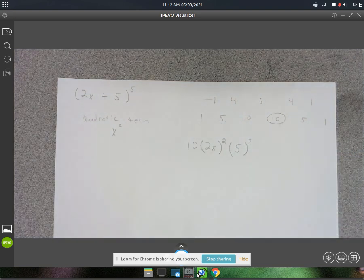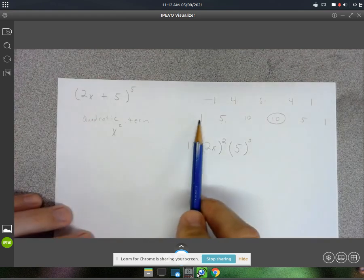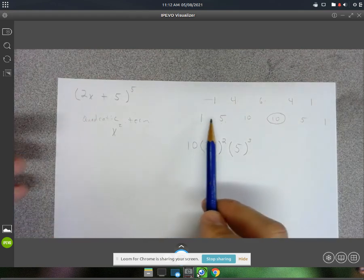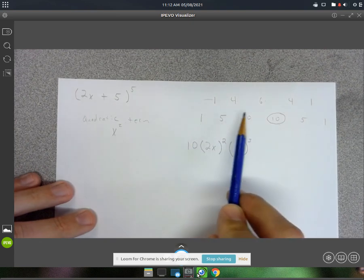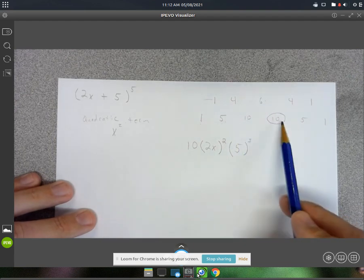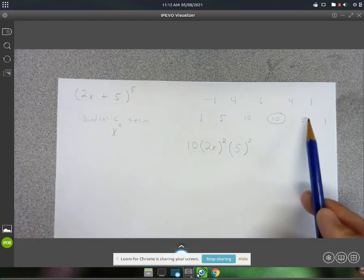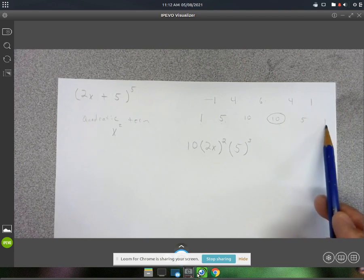But if you weren't sure, you could count upwards, this is what you would do, this one would be 5 to the 0, 5 to the 1st, 5 to the 2nd, 5 to the 3rd, right there, and then 5 to the 4th, and then finally 5 to the 5th.